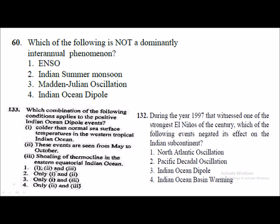From CSIR NET 2018: 'Which combination of conditions applies to positive Indian Ocean Dipole events?' During positive IOD, warm water develops over the western Indian Ocean, so the option stating 'colder than normal SST in the western tropical Indian Ocean' can be eliminated. Since all answer options except option 4 include that eliminated option, the answer is option 4 — only conditions 2 and 3 — which include shallowing of the thermocline in the eastern equatorial Indian Ocean and the events occurring from May to October.